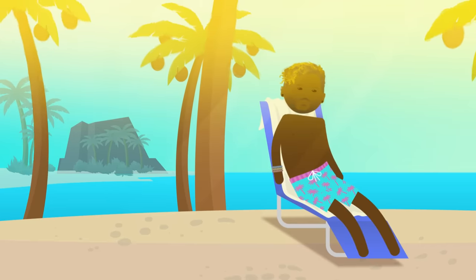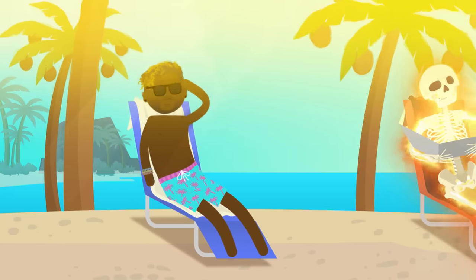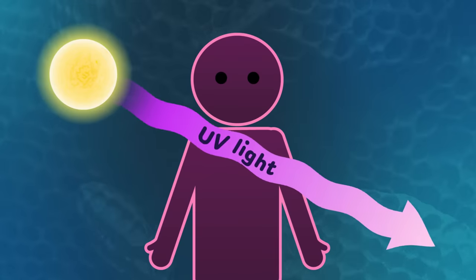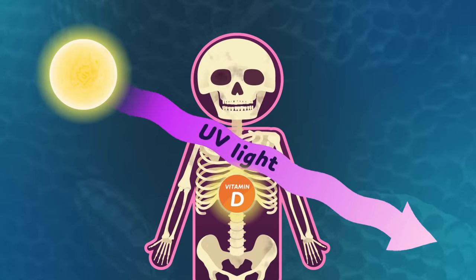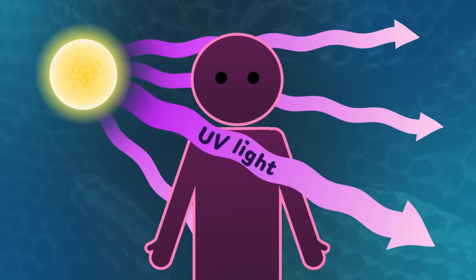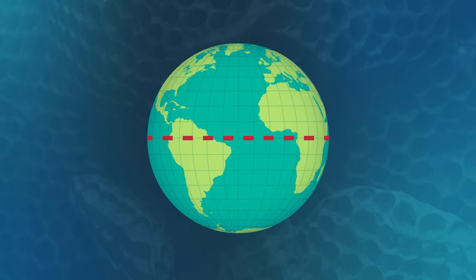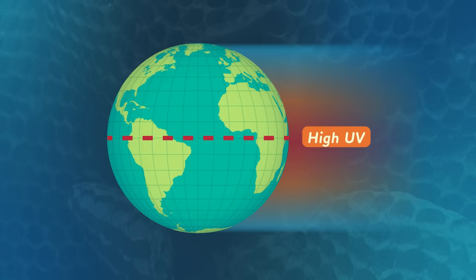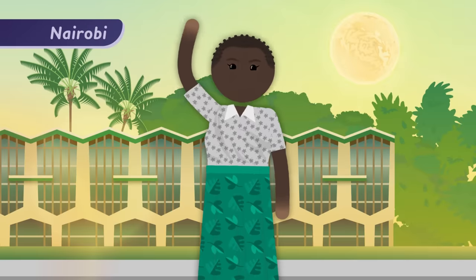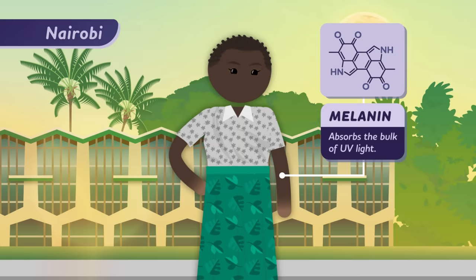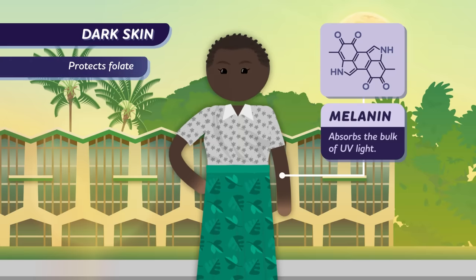Throughout our evolutionary history, humanity has faced a do-or-die juggling act: reap the benefits of ultraviolet rays from the sun without being destroyed by them. Skin exposed to enough UV light produces vitamin D needed to build strong bones. But too much UV light destroys folate, an important vitamin everyone needs for nucleic acid synthesis. So no matter where we've lived, we've needed to hit that ideal UV light sweet spot. The intensity of UV rays isn't the same everywhere on Earth — it's more abundant closer to the sunny equator, and less so nearer the poles. In sunnier parts of the world, it helps to have darker skin, which contains more of a substance called melanin. Melanin absorbs the bulk of UV light, so dark skin can protect precious folate and still make vitamin D.